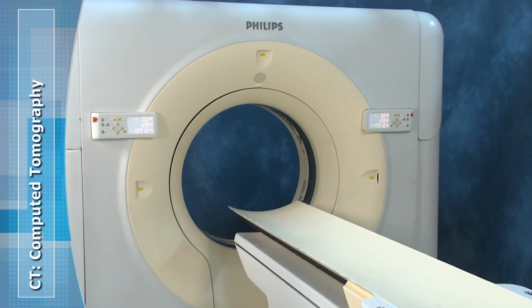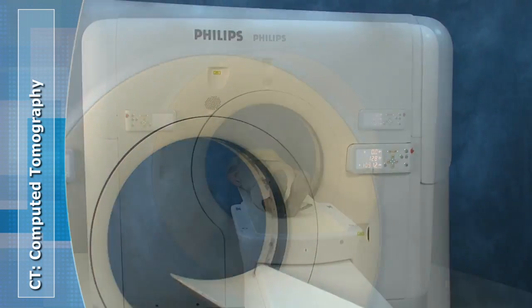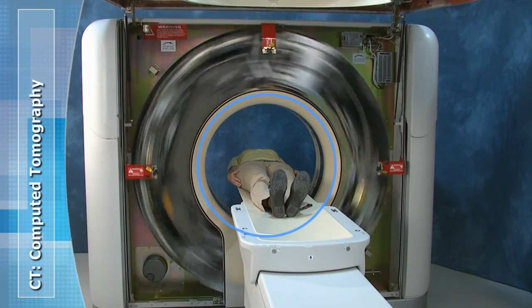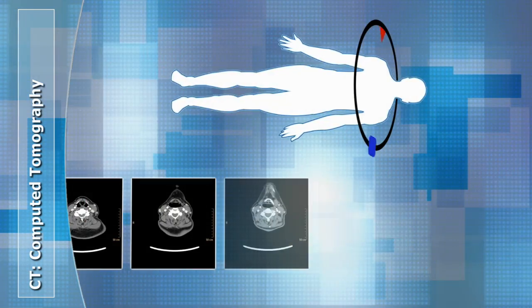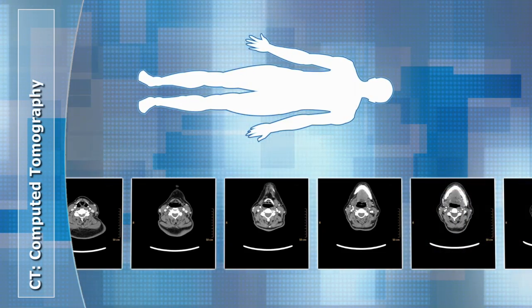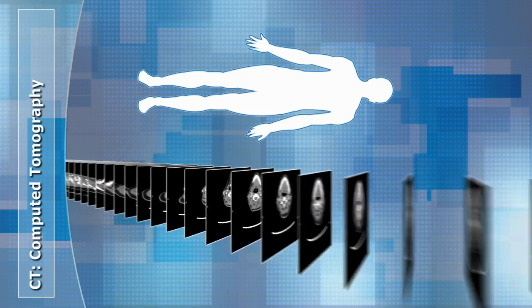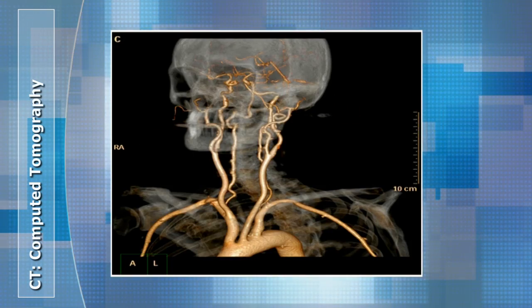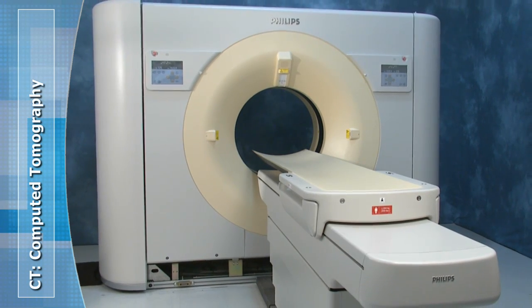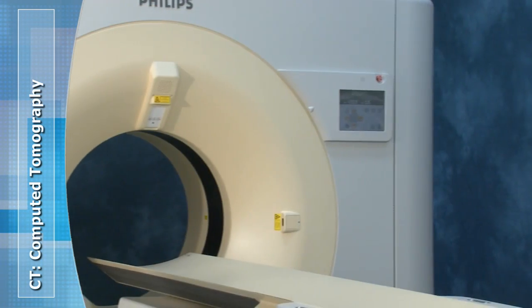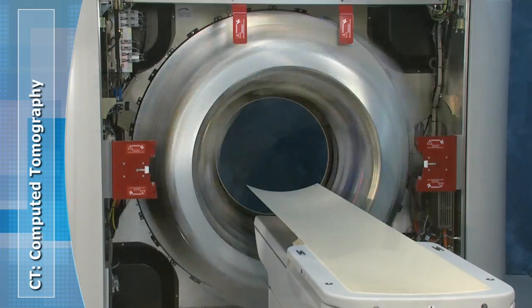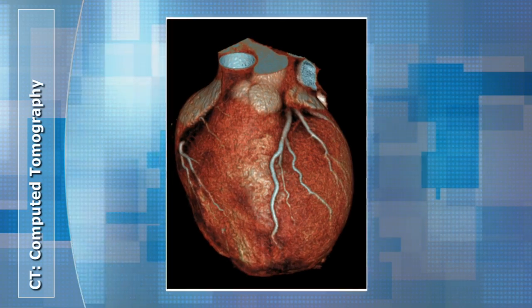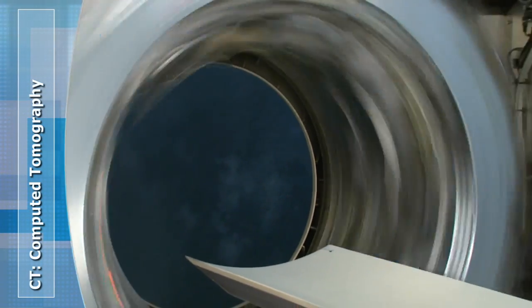CT, or computed tomography, gives our traditional x-ray a twist. By rotating the entire x-ray device, a CT scanner can produce highly detailed 3D anatomical images of the various structures in the body. In CT, the competitive edge lies with the speed of the scan, and once again, Philips is leading the way. Whereas a decade ago a 15-second scan was considered fast, today's devices, like our top-of-the-line ICT scanner, can scan the entire heart in less than a second. With trauma patients suffering from life-threatening injuries, this increase in speed is critical.